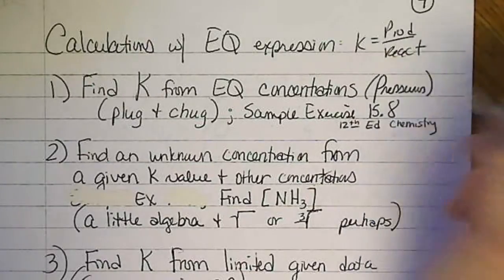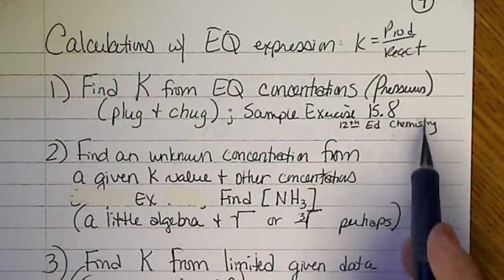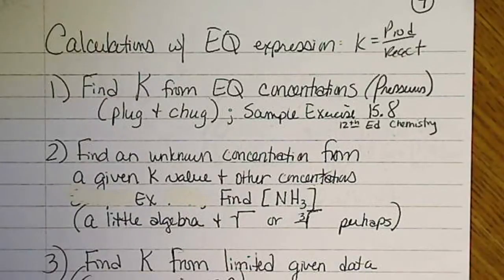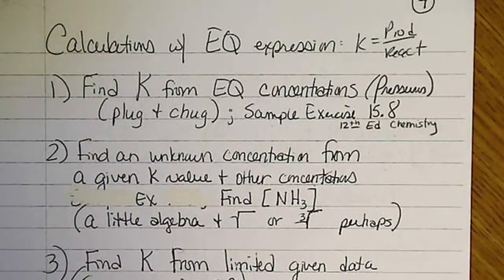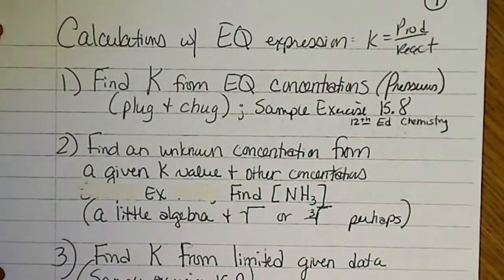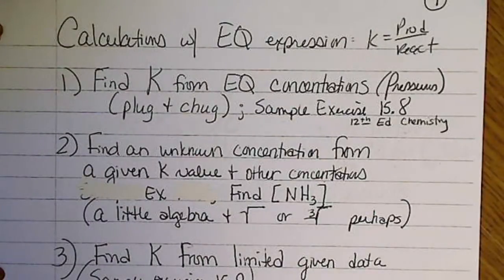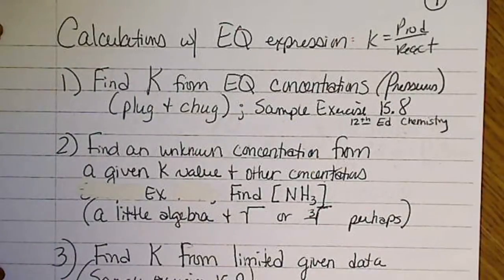And in our current textbook, the 12th edition of Chemistry, the Central Science, we can refer to these examples. I have written a problem where we're just going to look at the Haber process, the production of ammonia from hydrogen and nitrogen, and plug in values for K.